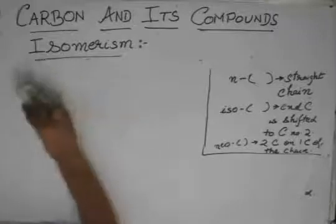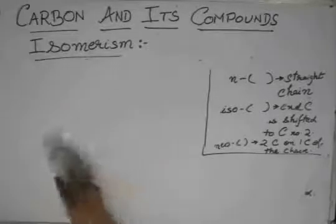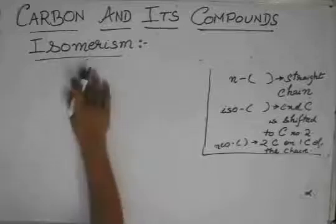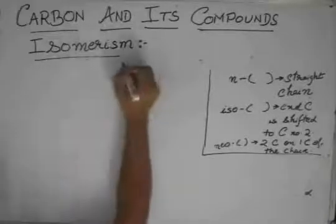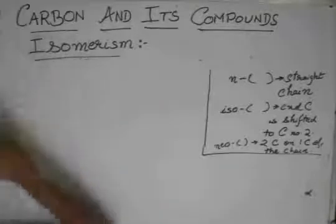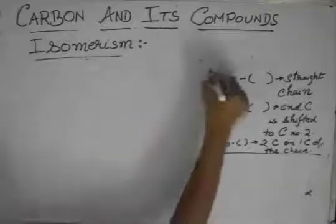So, isomerism, structural isomers for alkanes, not generally, actually starts from butane.